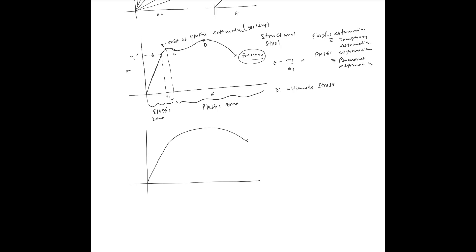In both of these plots, the points of interest are point A — the limit of linear elasticity — and point B — the onset of yielding, where we define the stress as yield stress, sigma_y. Then there is point D, the ultimate stress point. These, along with E, the elasticity modulus, are the three properties we are mostly interested in when analyzing how much stress a certain geometry or part can take.